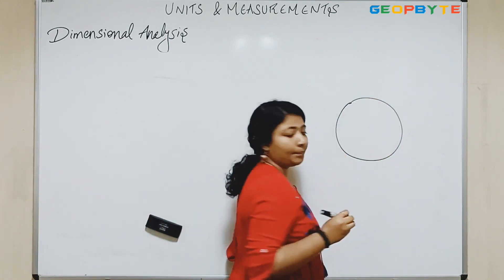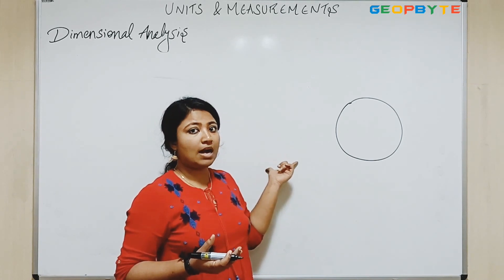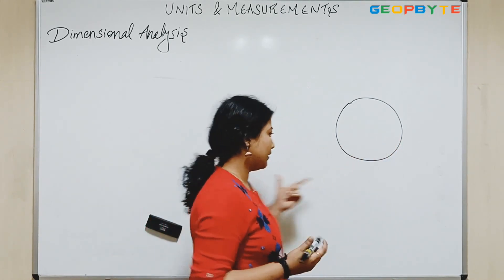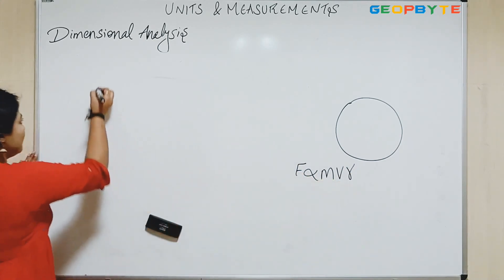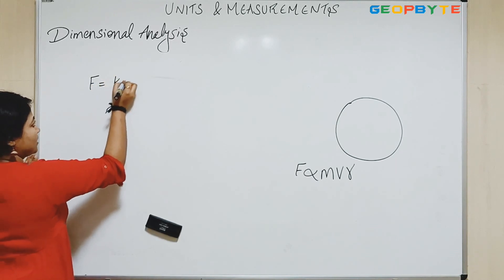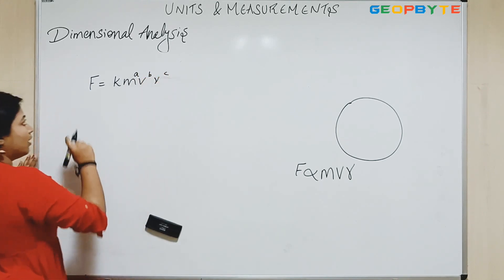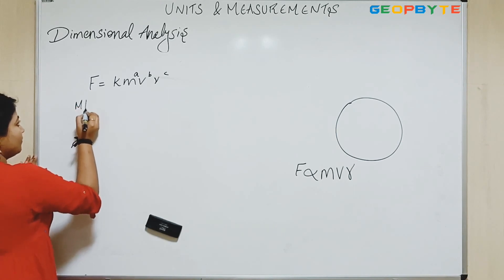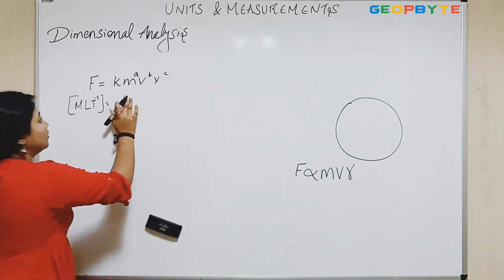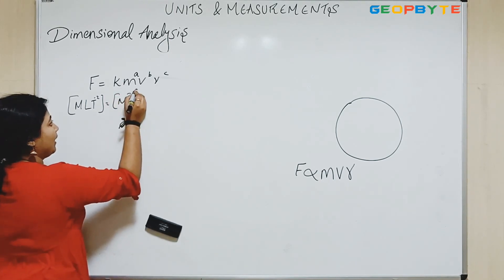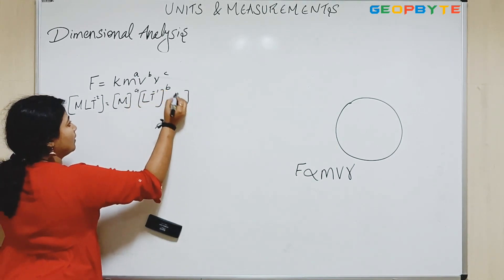If an object of mass M is in uniform circular motion, we need to find how the force is related to velocity and radius of the circle. It is assumed that this force is dependent upon mass, velocity, and radius. So we can write F equals some constant K times M to the power A, V to the power B, and R to the power C. We know force equals mass into acceleration, that is M L T to the power minus 2. Not considering K, this equals M to the power A, times V which is L T to the power minus 1 to the power B, and R which is L to the power C.